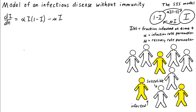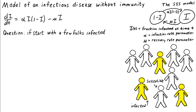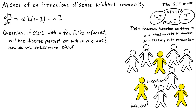Let's analyze this dynamical system to see what behavior it predicts. In particular, we're interested in how the behavior depends on the parameters alpha and mu. Let's try to answer a basic question: if we start with a few folks infected, so we start with a positive i, although it might be small, what will happen? Will the disease persist? Will it die out?